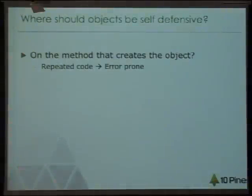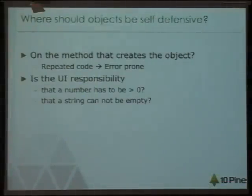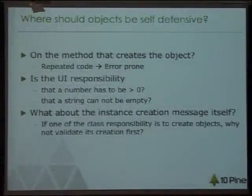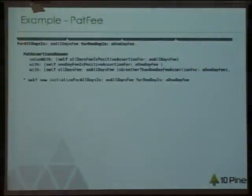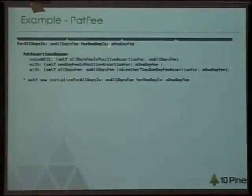Who has the responsibility of assuring that an object is valid? We can think of different options. One is that every time you create the object you do it yourself — that's not a good solution. We could put it in the UI — not a good solution either. The UI is not responsible for creating valid objects. I think the best solution is to give that responsibility to the object that creates objects. If we have classes whose responsibility is to create objects, why not give that responsibility to the classes? Here is an example: a Fee is how much the conference is going to charge you.